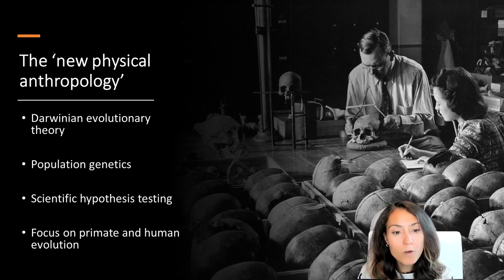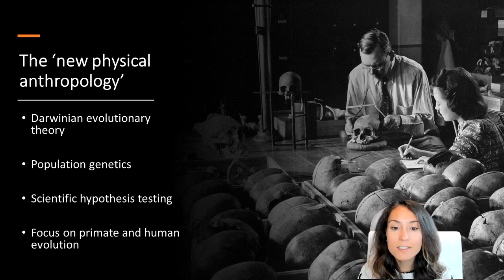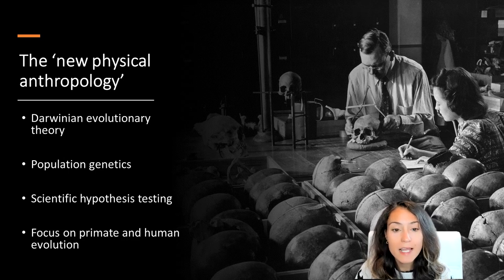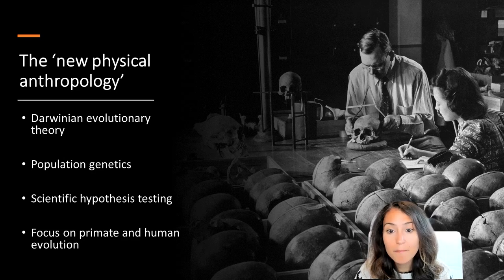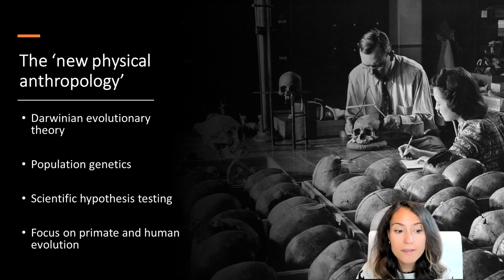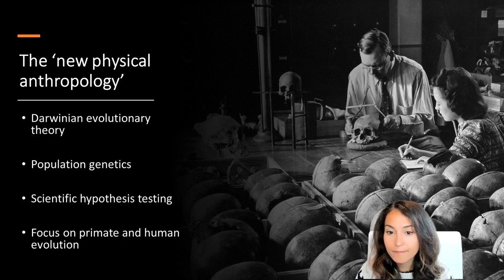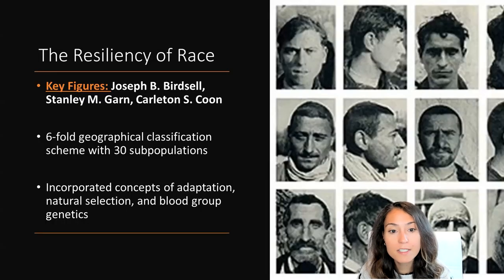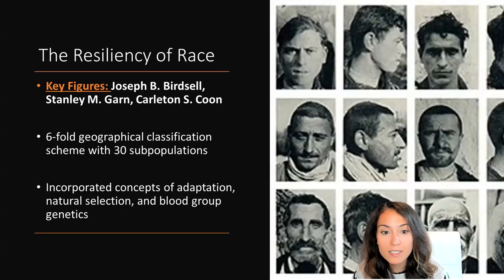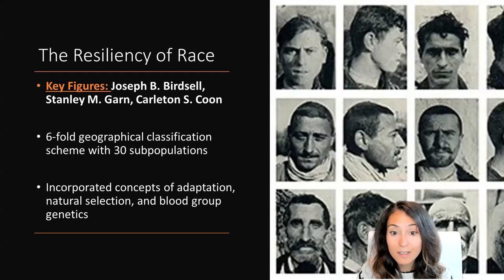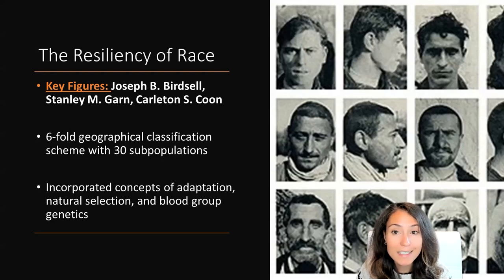Sherwin Washburn, a student of Hooton's, led this new wave of scientific scholarship. Washburn's work focused on primate and human evolution and looked at human variation based on population size rather than racial groups. Despite Washburn's arguments for a shift towards population rather than race, the concept of race remained a concrete unit of analysis in the minds of many scientists into the 20th century.